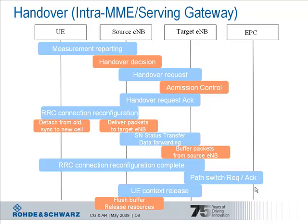The target base station can then start the handover over the air interface. It is then sending the handover command to the UE. And in case of LTE this is actually an RRC connection reconfiguration message. It contains all the required information regarding the target cell so that the UE is able to access the target cell.